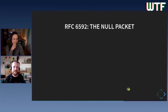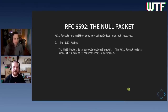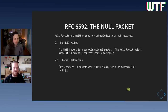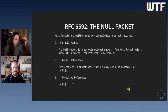Another RFC is 6592, the null packet. It specifies null packets which are neither sent nor acknowledged when not received. The informal definition states that the null packet is a zero-dimensional packet and that it exists since it is non-self-contradictorily definable. The formal specification follows, but it reads 'extension zero of the...' and then there's a reference: 'now null.' At the end of the document, there's a list of references and related work, where the key entry points to an empty string. That's all you need to know about null packets.